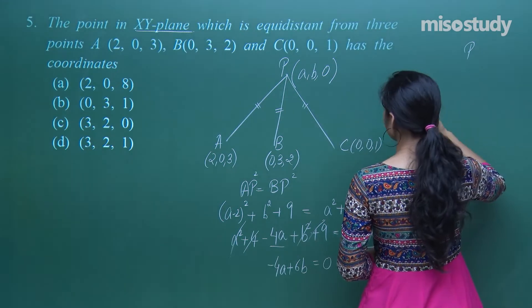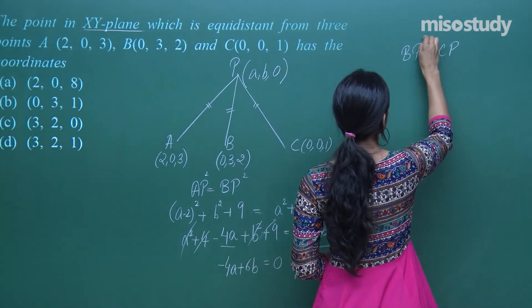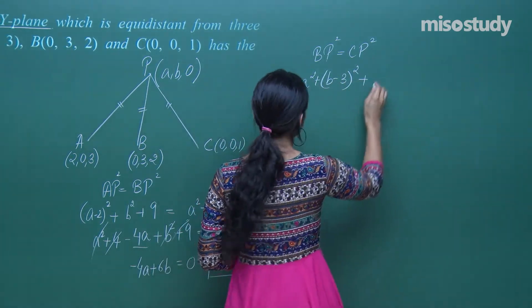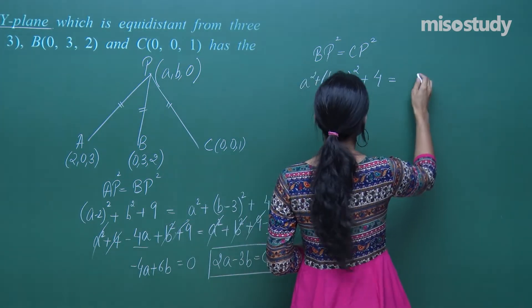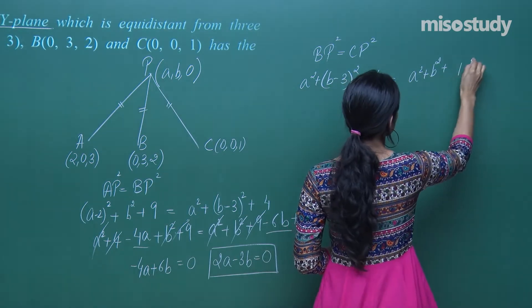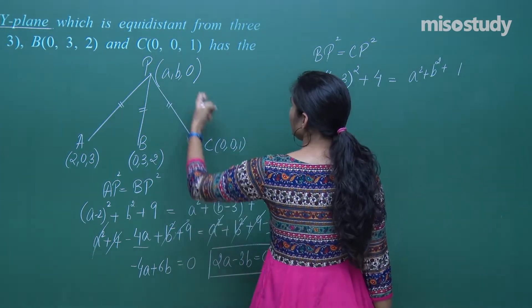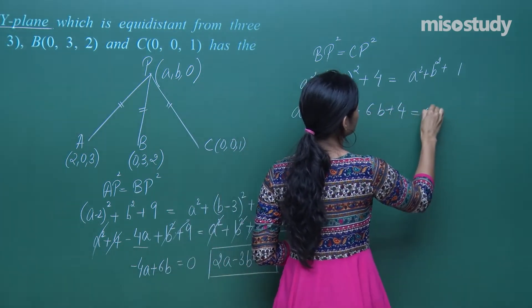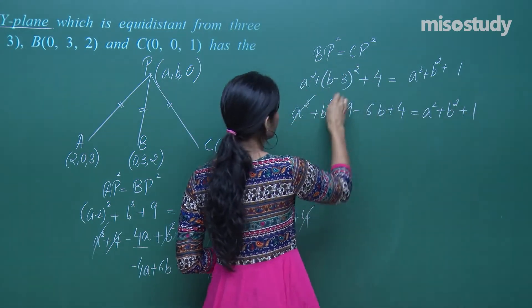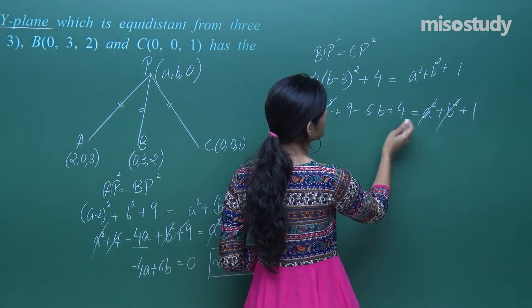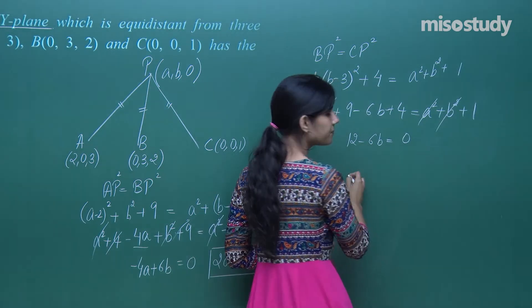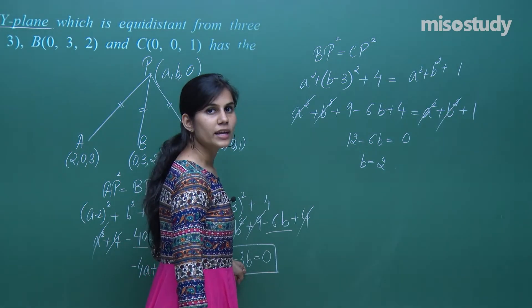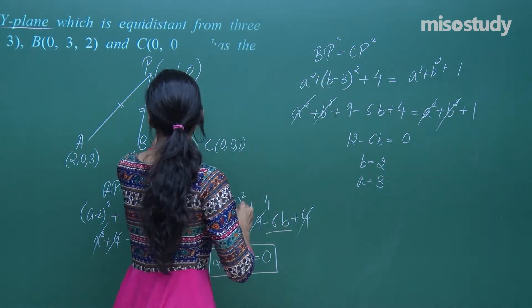Using BP² = CP²: a² + (b−3)² + 4 = a² + b² + 1. This simplifies to 13 − 6b = 1, giving b = 2. Substituting b = 2 into 2a − 3b = 0 gives 2a − 6 = 0, so a = 3. Therefore the point is (3, 2, 0).